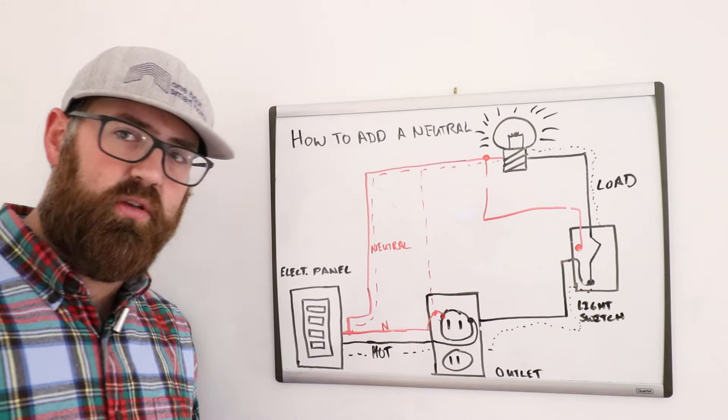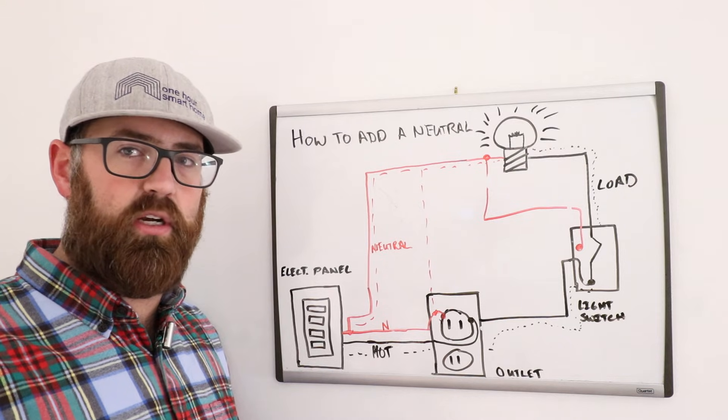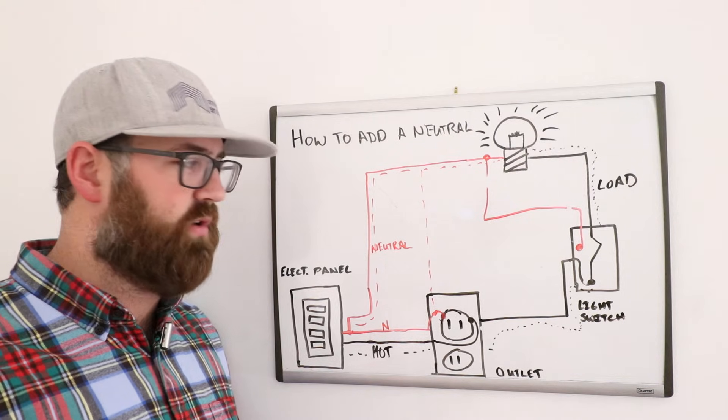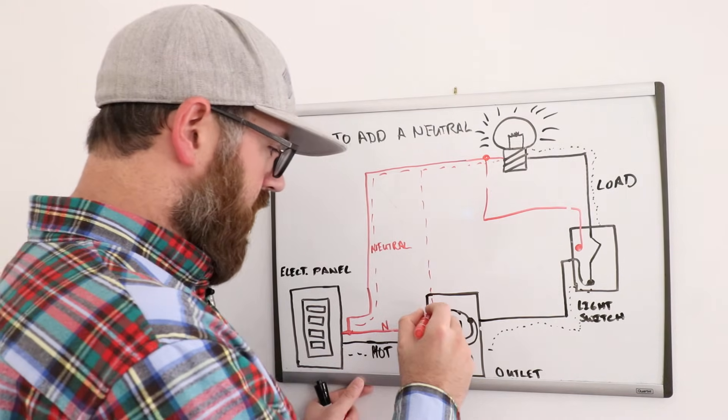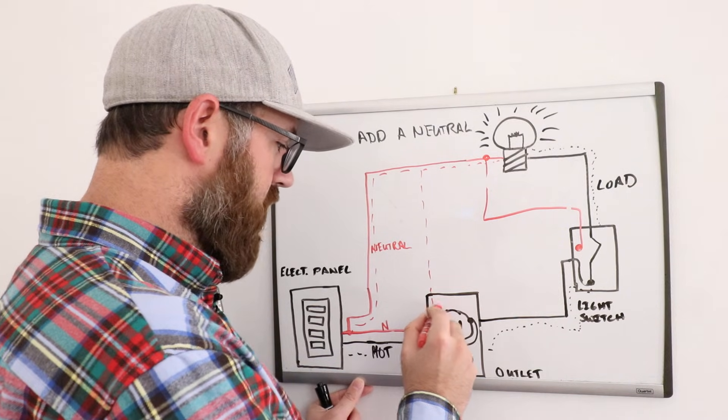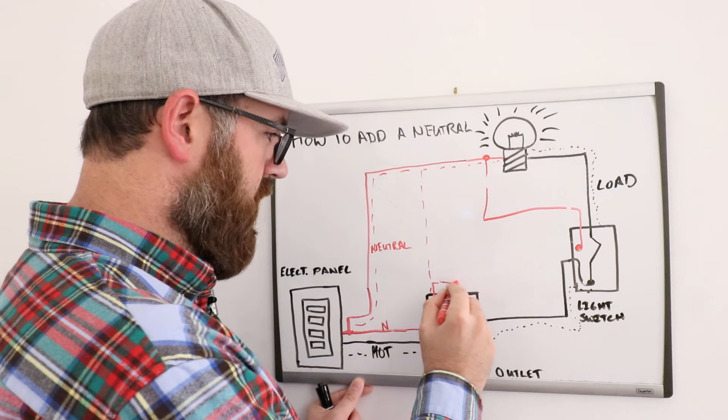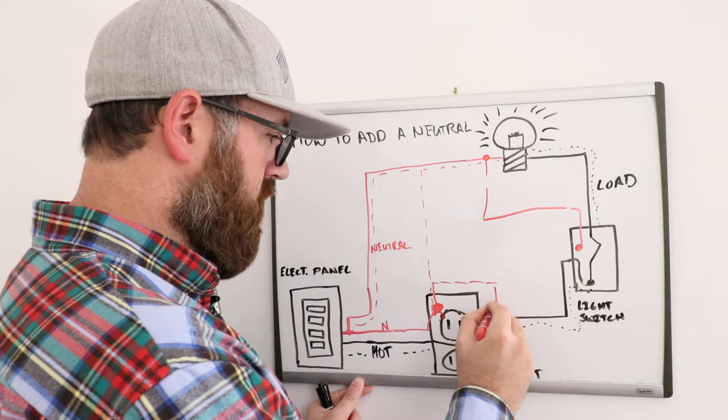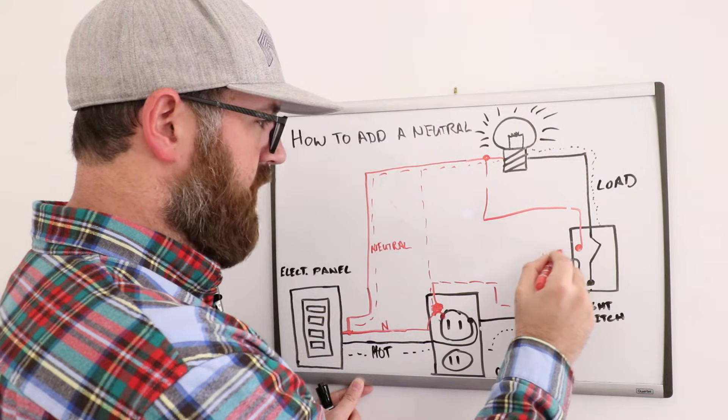The other option that you have, and you have to make sure that this neutral wire is on the same circuit, that's the ideal way that you want to do this, is that you could go from this outlet, and you could splice in right here at this neutral wire that's on the outlet on the same circuit, and you could run a neutral wire to the light switch like so.